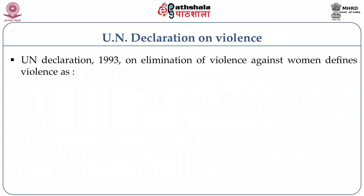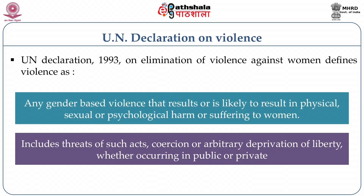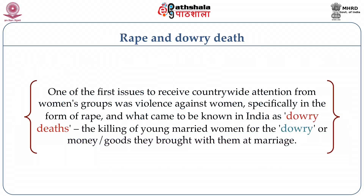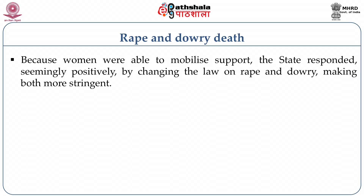The UN declared in 1993 the elimination of violence against women, defining violence as any gender-based violence that results or is likely to result in physical, sexual, or psychological harm or suffering to women — including not only physical violence but threats of such acts, coercion, and arbitrary deprivation of liberty, whether in the public or private domain. Another issue which received countrywide attention was the so-called dowry deaths, where young girls were killed because they did not bring money or goods at the time of marriage. Women were able to mobilize a lot of support, and the state responded positively by changing the laws on rape and dowry and making them more stringent.